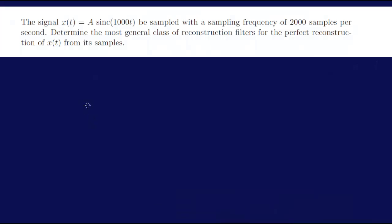Okay, so the signal x(t) = A sinc(1000t) be sampled with a sampling frequency of 2000 samples per second. Determine the most general class of reconstruction filters for the perfect reconstruction of x(t) from its samples.